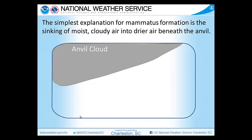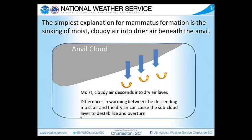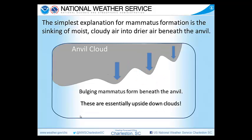This can be shown by the blue arrows in this schematic. Differences in warming between the descending moist air and the dry air surrounding the area can cause the subcloud layer to destabilize and overturn. That allows the mammatus cloud to get a rounded shape, and then they can start to bulge beneath the anvil because of the difference in temperature. They are essentially upside-down clouds.